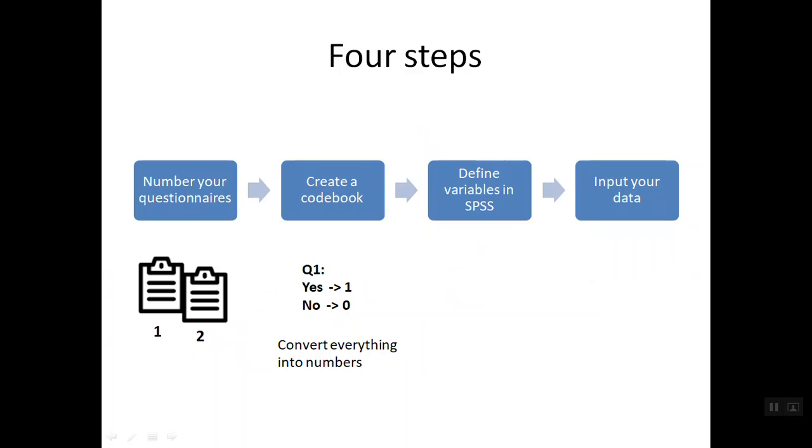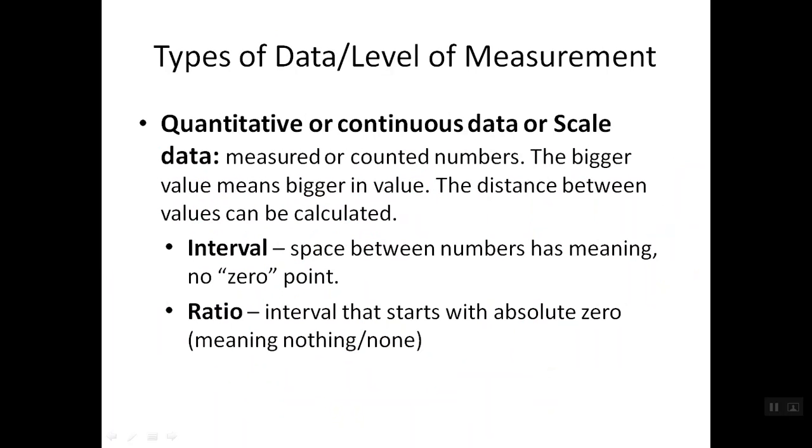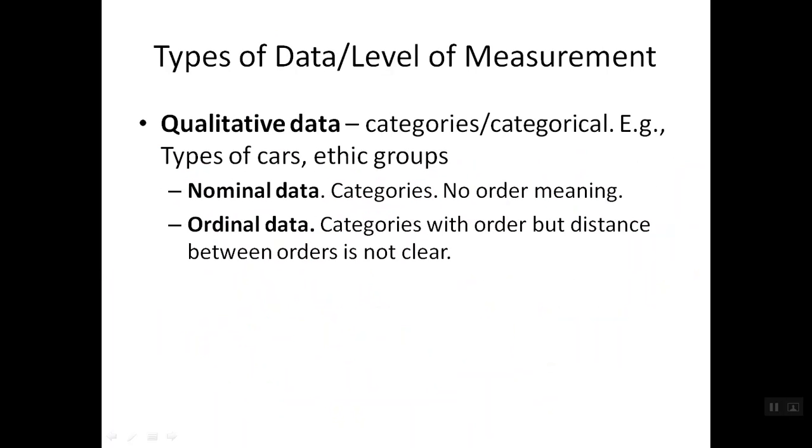So there are two major types of data. The first one is qualitative data. The second one is quantitative data or scale data. In qualitative data, you also see two types of data under. One is nominal data. Another one is ordinal data.